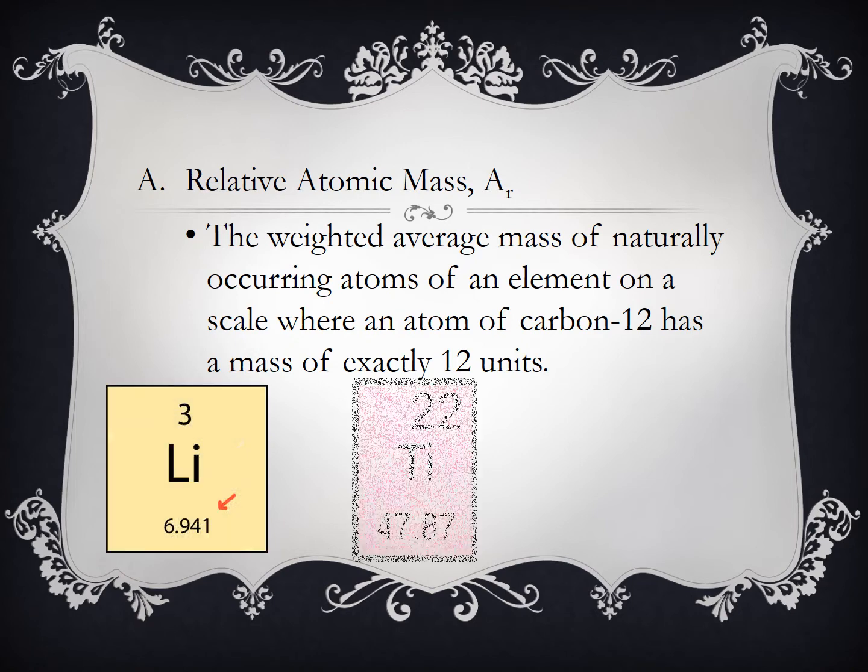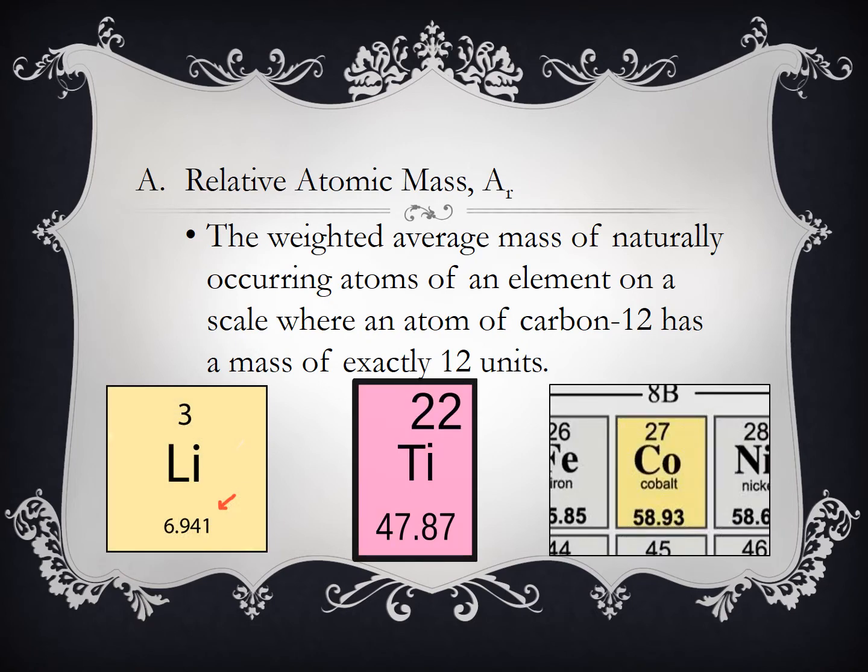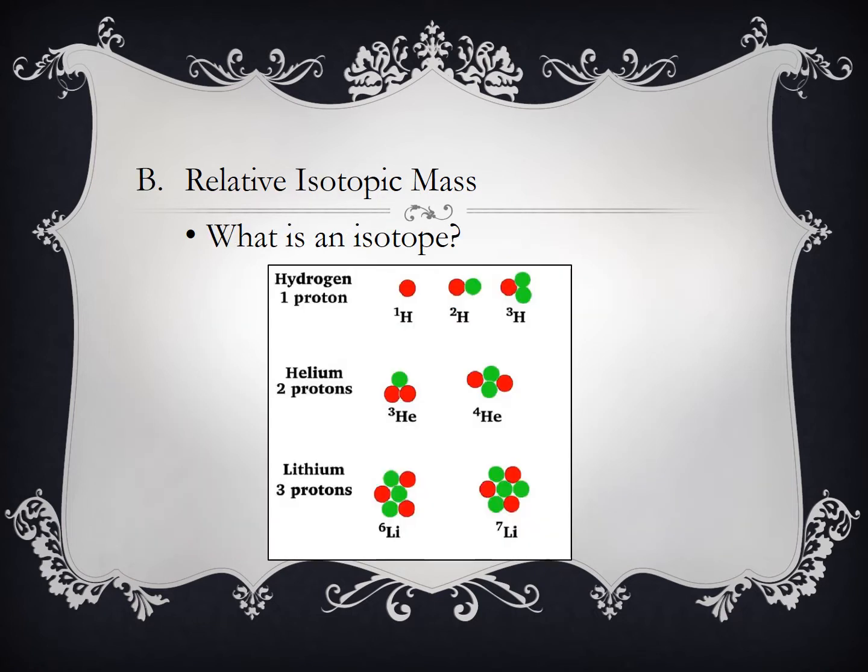Lithium, titanium, and cobalt, you notice they have decimals. The reason why is because not every element has just one isotope. For example, hydrogen has three isotopes: 1, 2, and 3, which basically means they have different numbers of neutrons. You can see helium, they both have two protons, which are the red, but one isotope, helium-3, has one neutron, and helium-4 has two neutrons. They give you different masses. Lithium the same way, still has three protons, but the number of neutrons change from three to four, depending if it's six or seven.